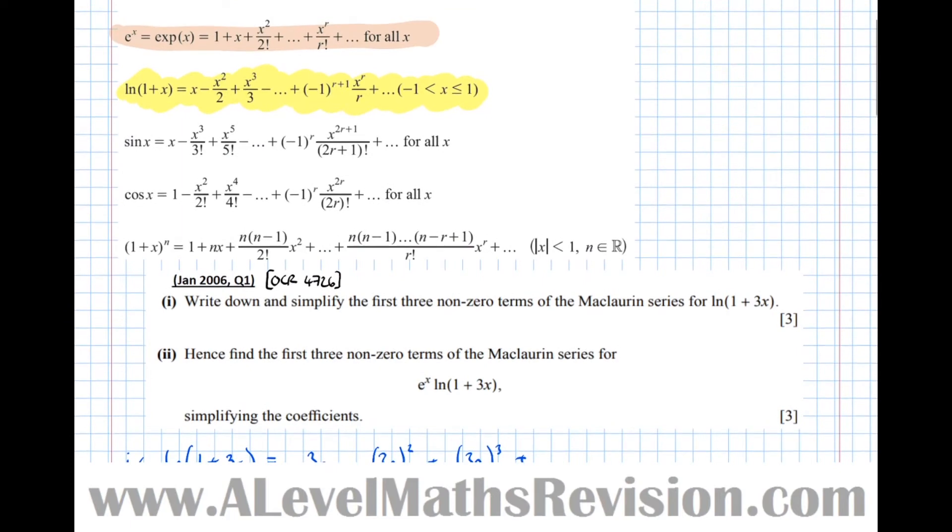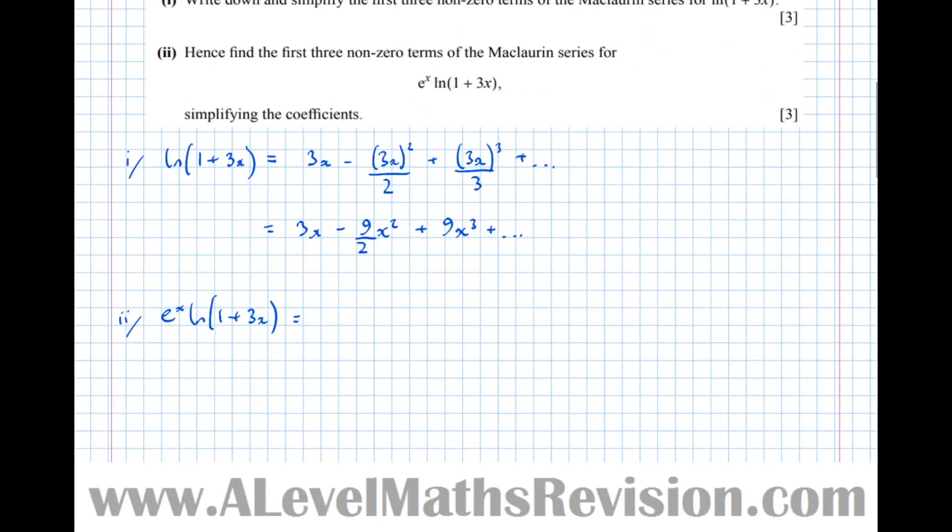So e to the x times log of 1 plus 3x equals, and the expansion was 1 plus x plus x squared over 2. And we're multiplying that by what we've just found, 3x minus 9x squared over 2 plus 9x cubed. By the first three non-zero terms, that means the smallest power, the next smallest power, and the next smallest power to that. We only want the first three powers of x.